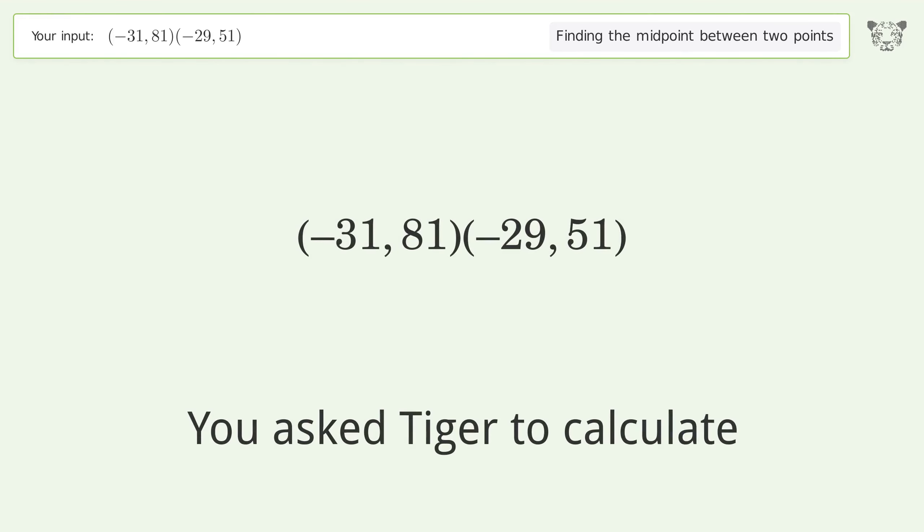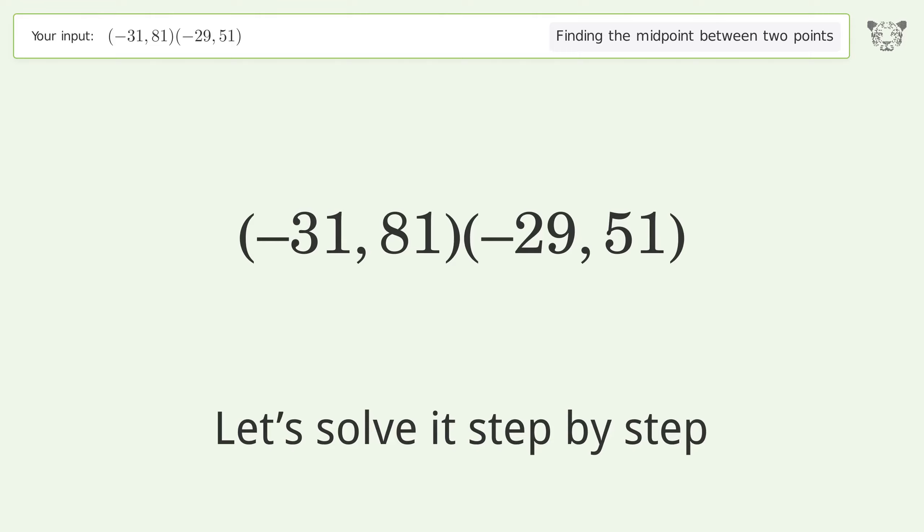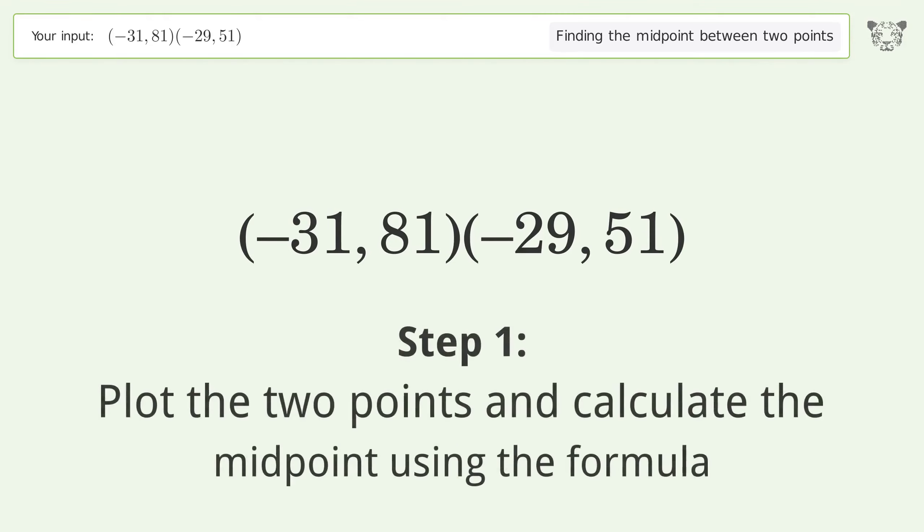You asked Tiger to calculate this. This deals with finding the midpoint between two points. The midpoint between the two points is negative 30 comma 66. Let's solve it step by step. Plot the two points and calculate the midpoint using the formula.